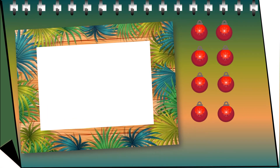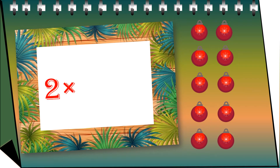Now you have eight balls with you, so add two more balls to it. Now it became ten balls. So two fives are ten — you add it five times.